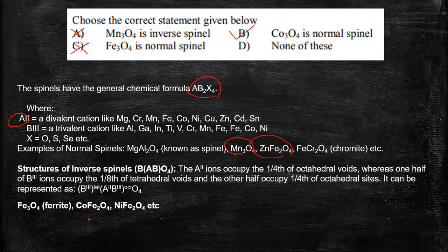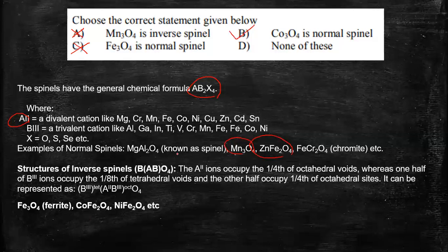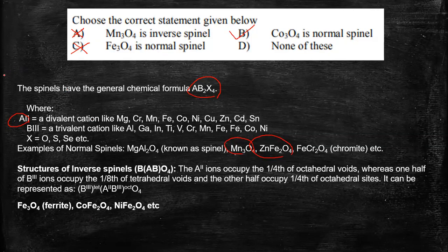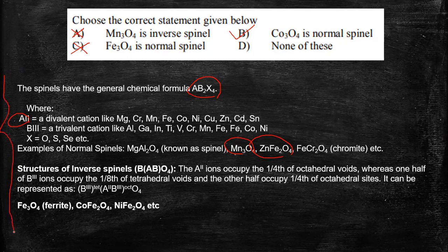And the examples of inverse spinel, ferrite, CoFe2O4 and NiFe2O4. So these things and the meaning of the spinels should be memorized. Now we will explain more on this on the context of how the octahedral filling is done, tetrahedral filling, those kinds of problems will be discussed later on.